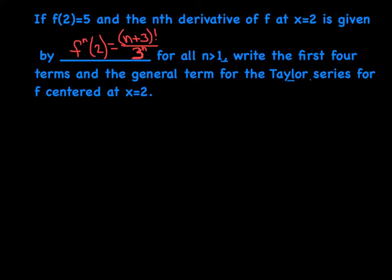So here's our first example tonight. It's kind of a mouthful, so we'll try to dissect it here. First of all, they're saying f of two is equal to five, and that the nth derivative of f at x equals two is given by this crazy expression right here, for all n's greater than or equal to one. Now, they want us to write the first four terms and the general term for the Taylor series of f centered at two. So here's the first thing we have to talk about.